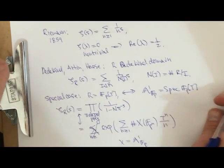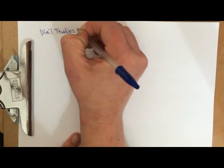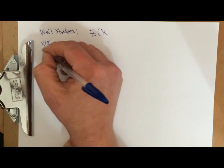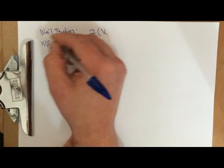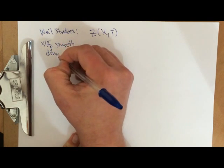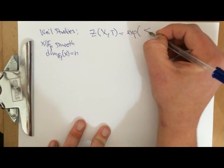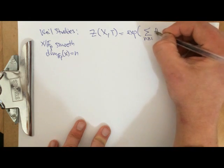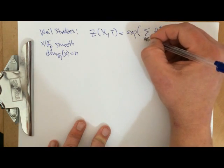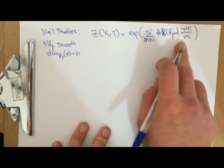So what Weil does: for X over F_p, smooth, with dimension over F_p equal to n, he studies the zeta function Z(X, T) for a variety over a finite field. In 1949 at the ICM — the International Congress of Mathematicians — he gave a lecture where he stated some conjectures about these varieties and proved it for curves, or curves and abelian varieties.